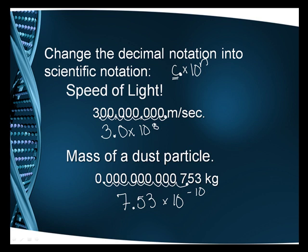Now did you notice that this one's a positive exponent and this one's a negative exponent? The reason is that this is a very big number. This means times 10 times 10 times 10, 8 times. That makes it a big number. This one is a negative number because it's actually a very small number. This means I'm actually multiplying by 1 over 10 times 1 over 10 times 1 over 10, 10 times.